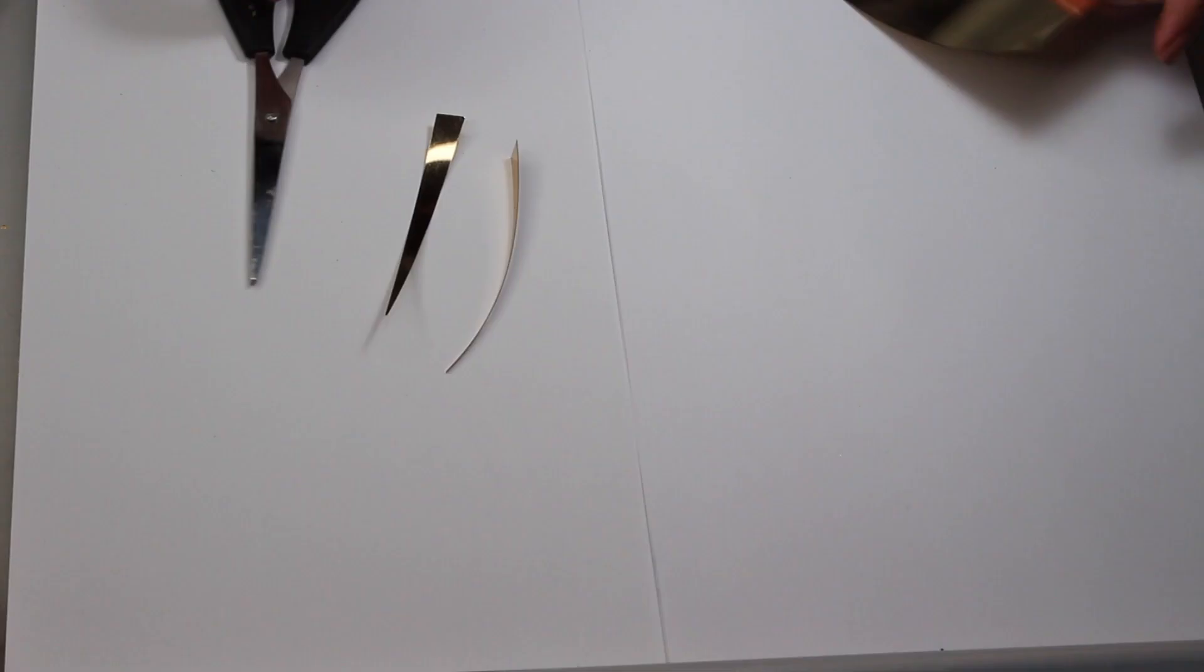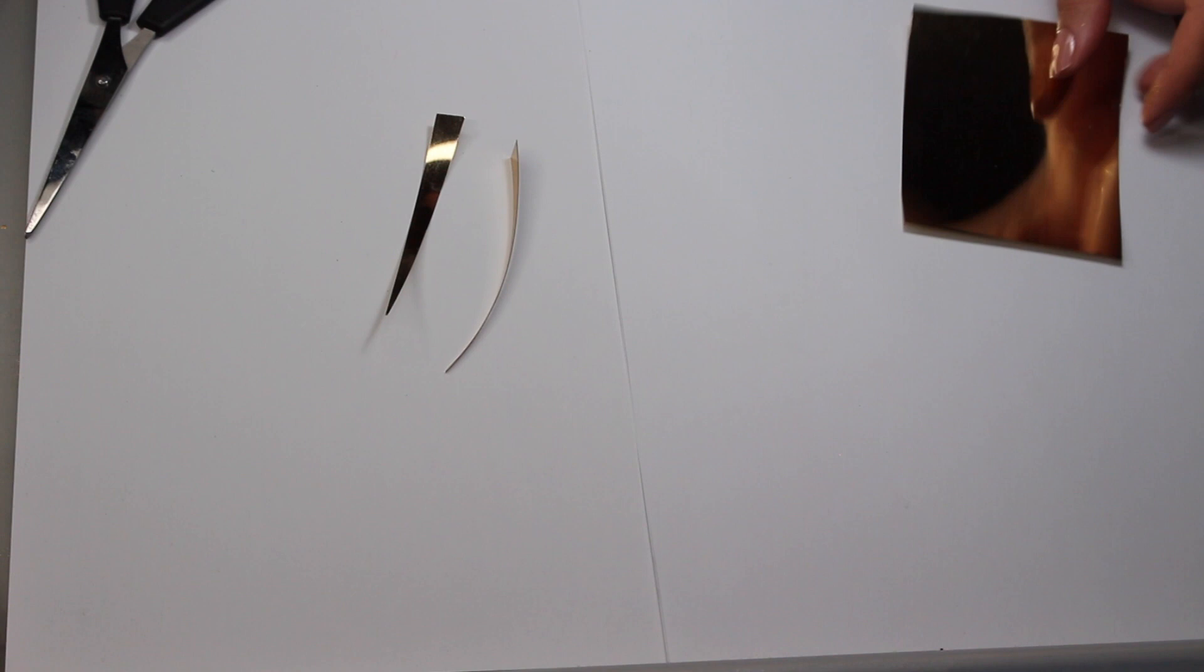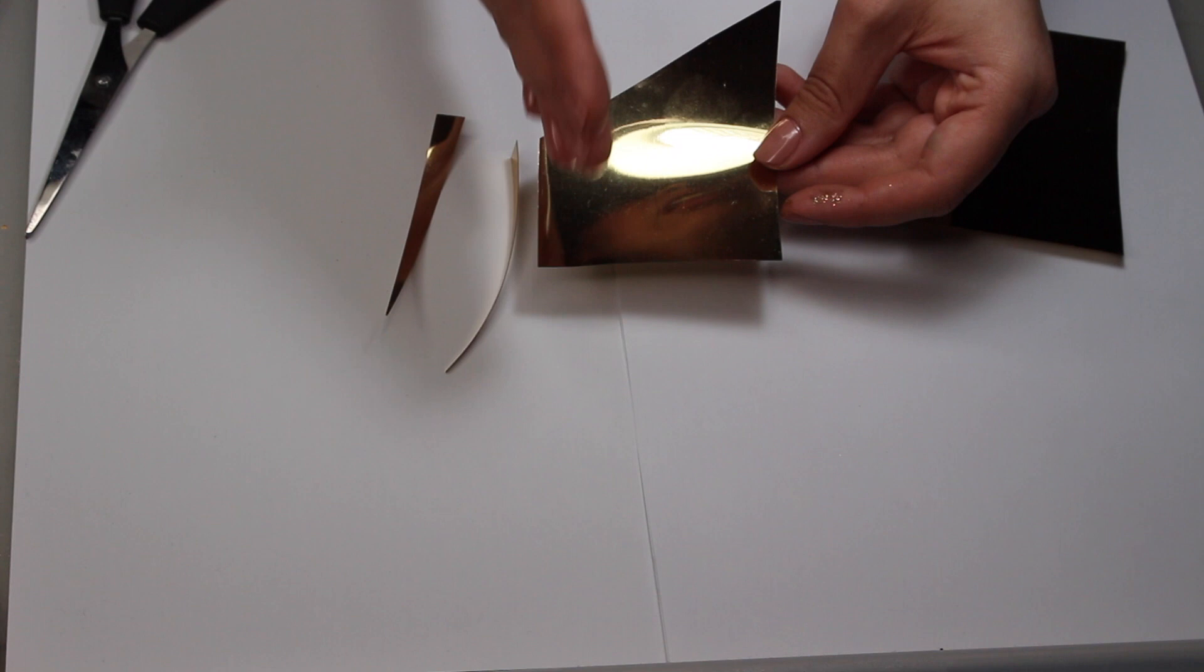For the bottom lashes I did the exact same thing, but I made sure that I cut my strip into an angle so that the lashes will go from shorter to longer. You can just flip it and cut pieces off.